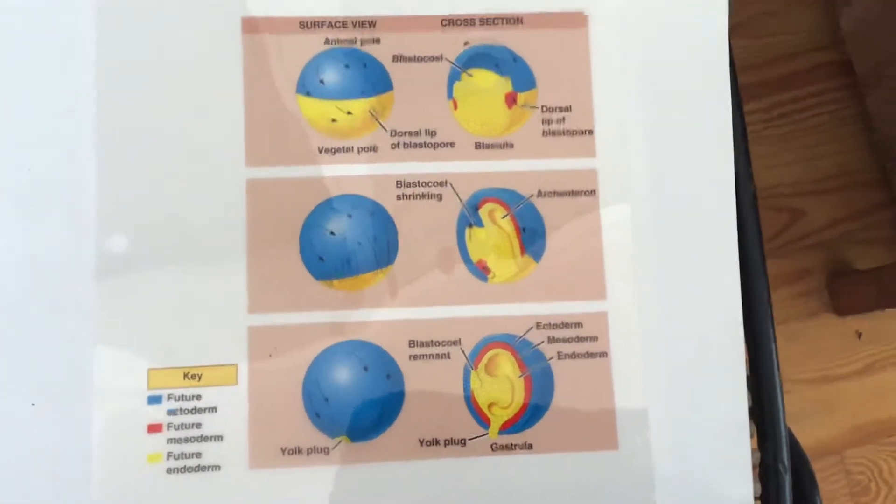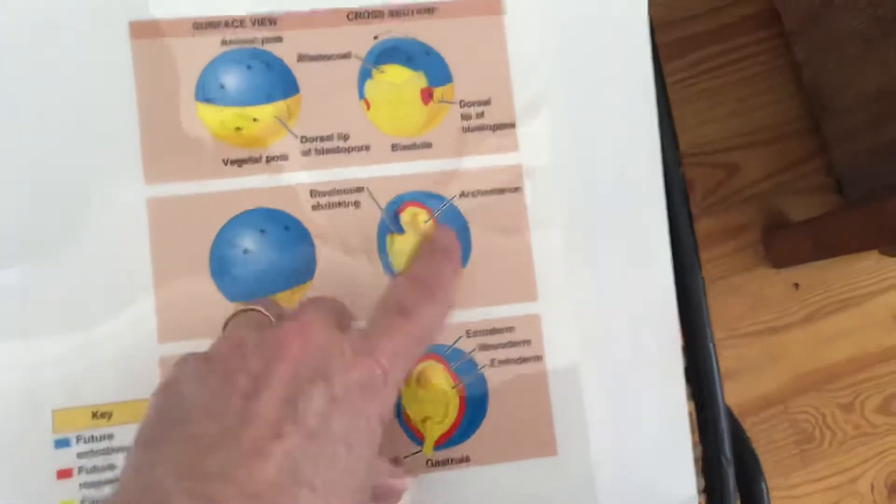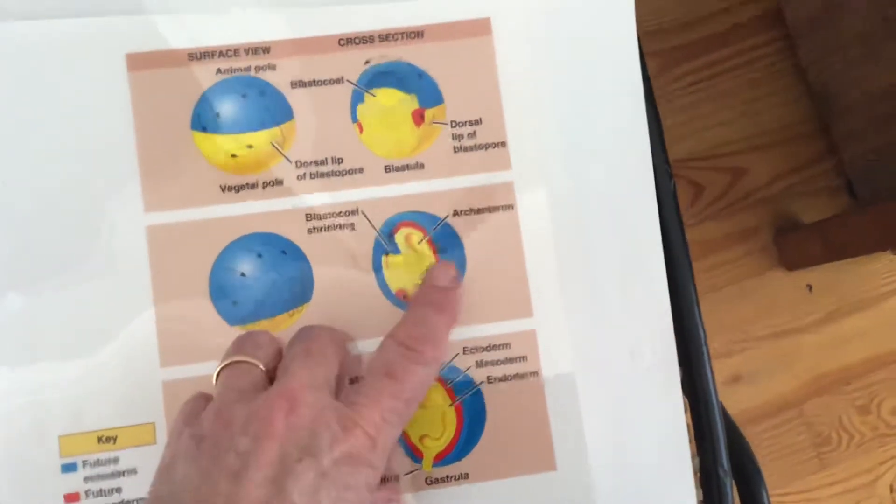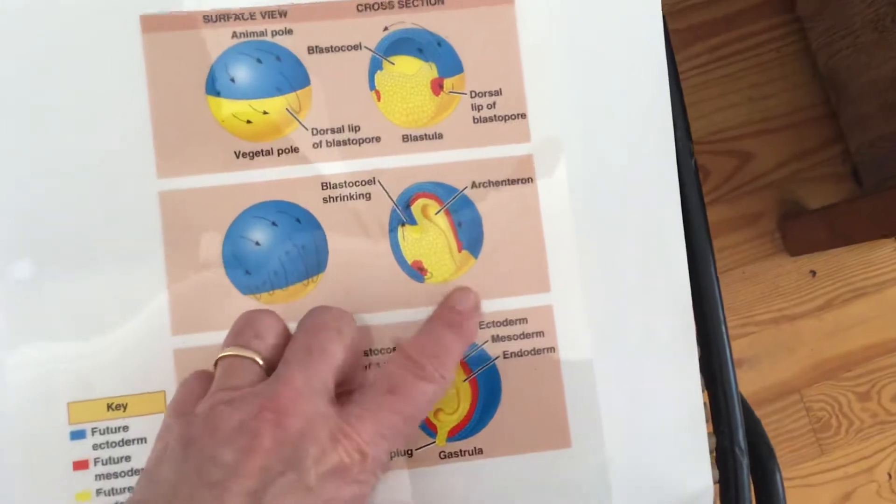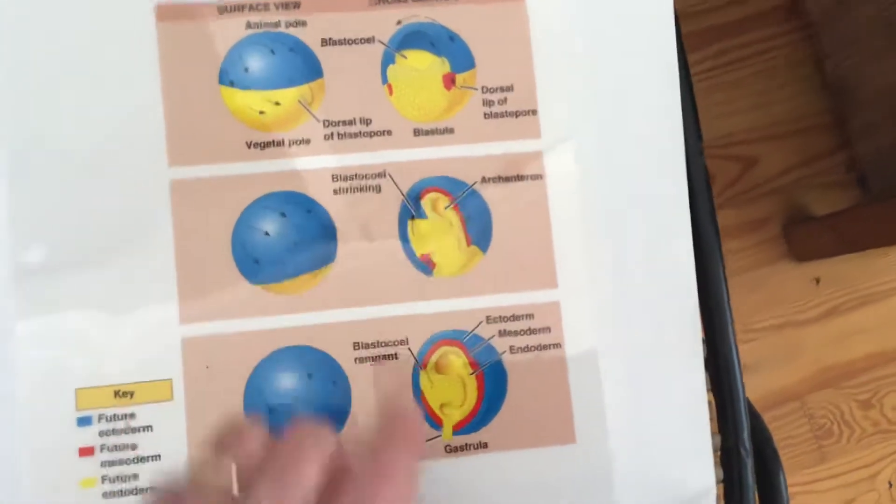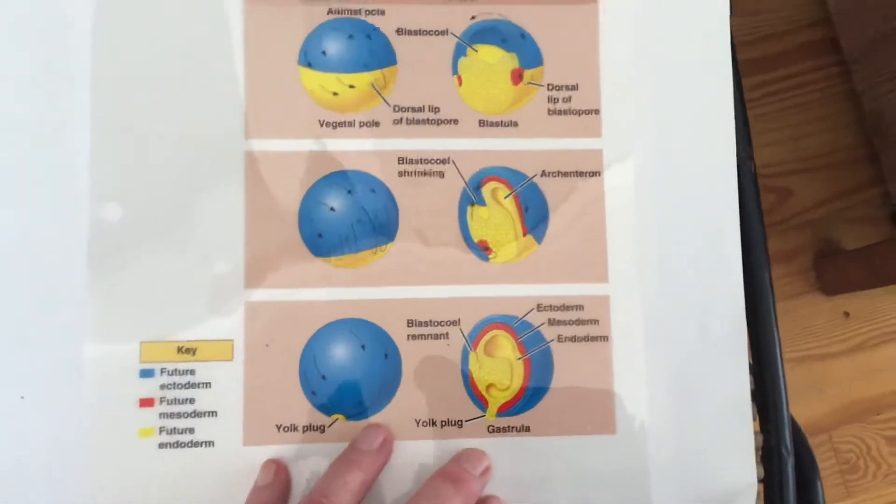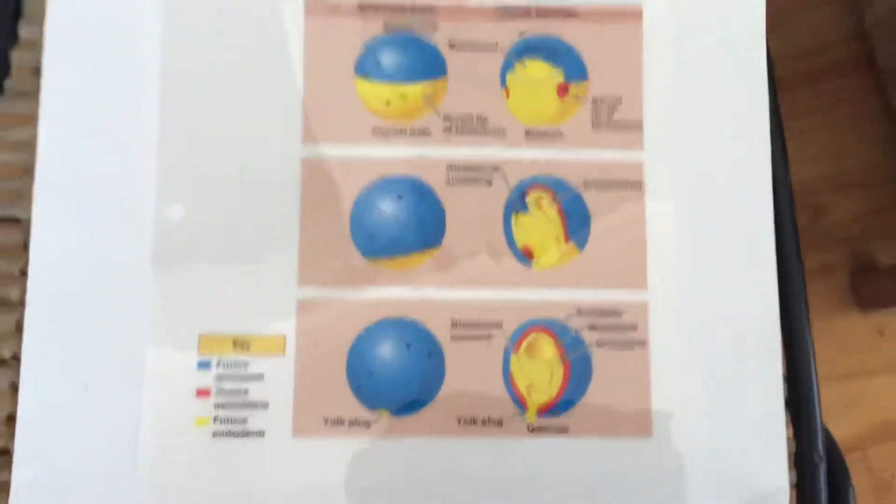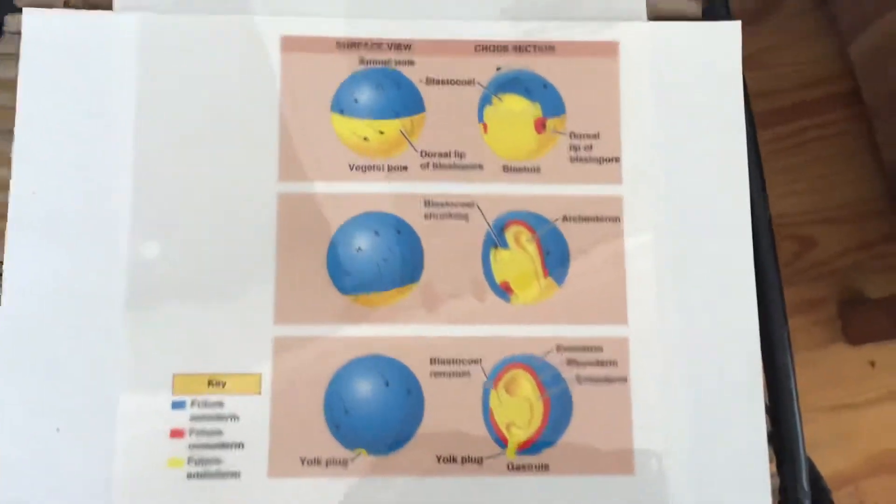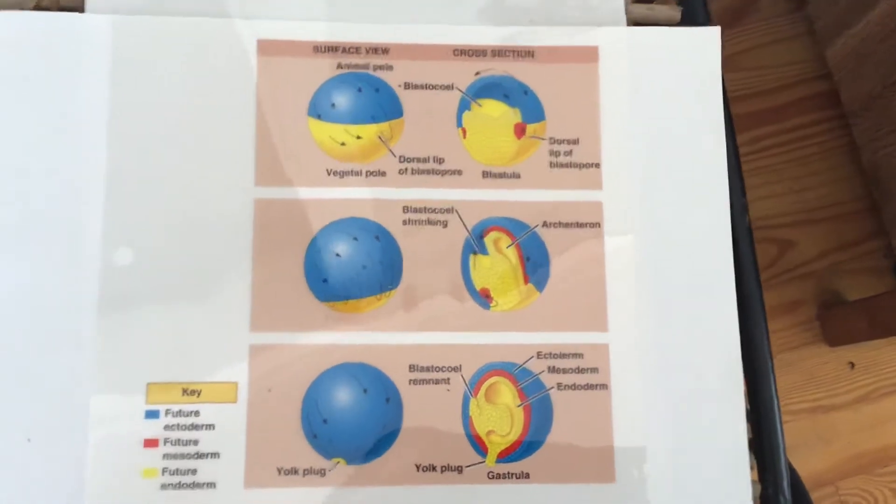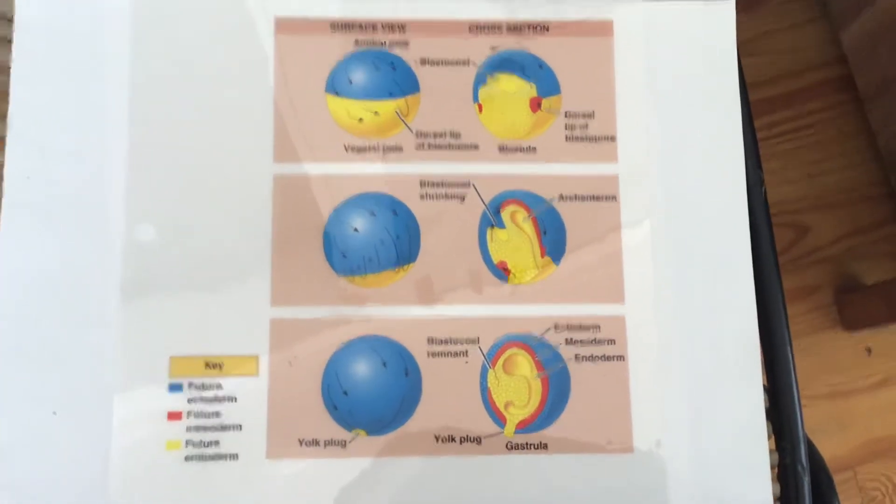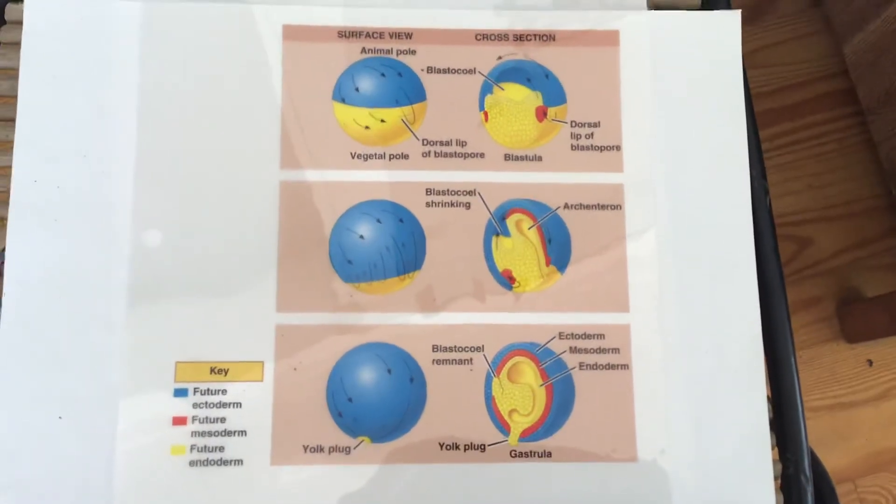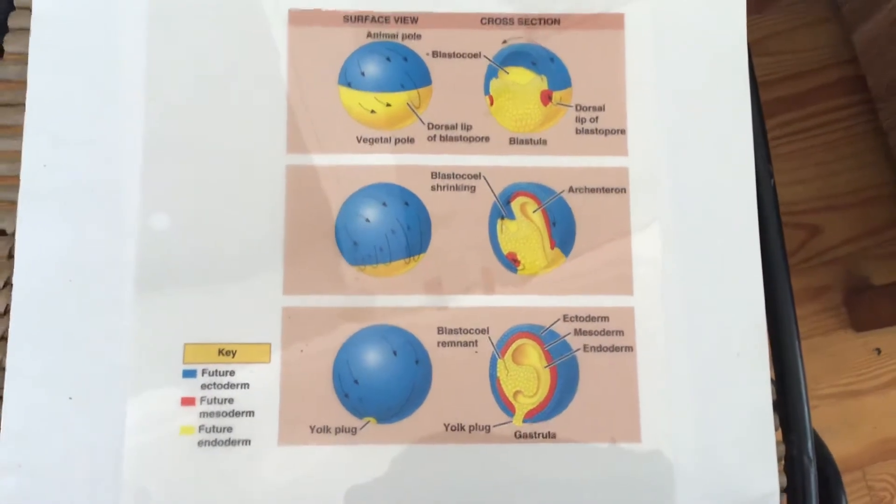You can also see that the start of the development of the different outside layer which is the ectoderm, the endoderm and the mesoderm. And of course later on, in humans of course, we have more kind of tissue layers that are not really called endo, ecto and meso.